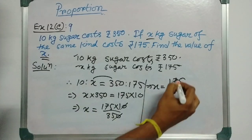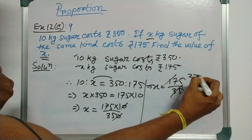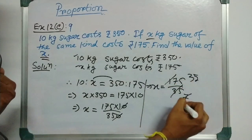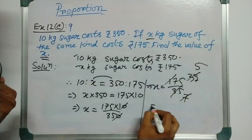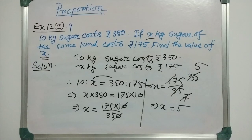Now, x equals 175 by 35. So, 5 into 7 is 35, this is 5 into 3 is 15. Therefore, x equals 5. So, that means the value of x is 5.